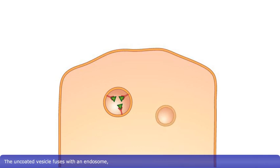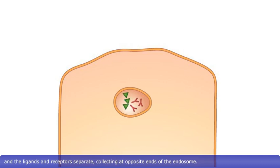The uncoated vesicle fuses with an endosome, and the ligands and receptors separate, collecting at opposite ends of the endosome.